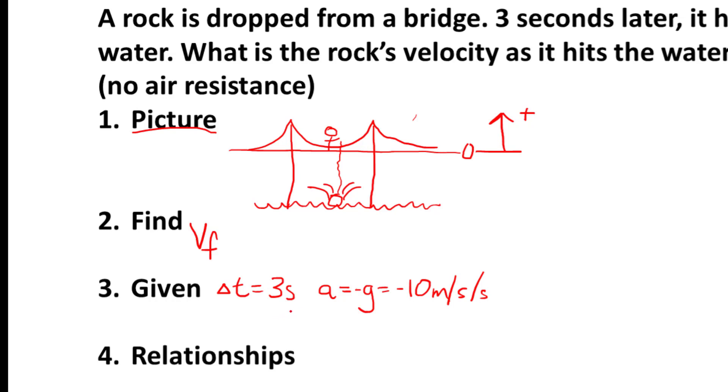Any other information that we have? We do. We see that the rock is being dropped, not thrown, but dropped. So our initial velocity is equal to zero.